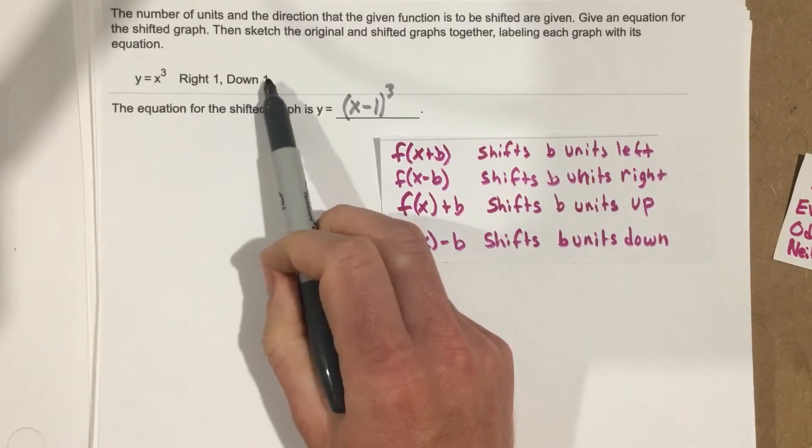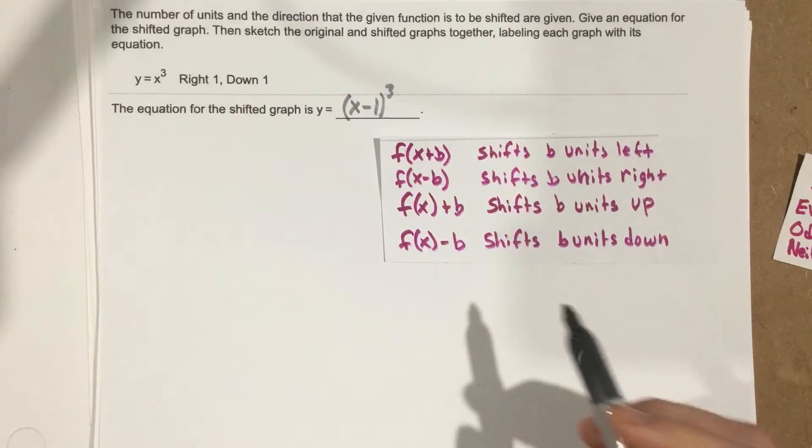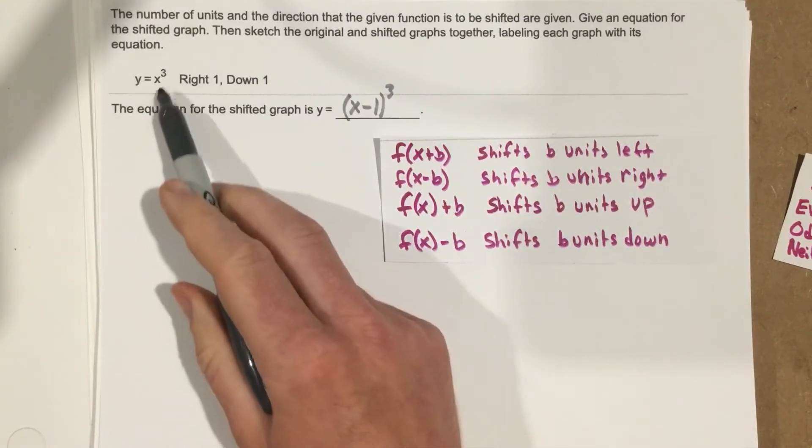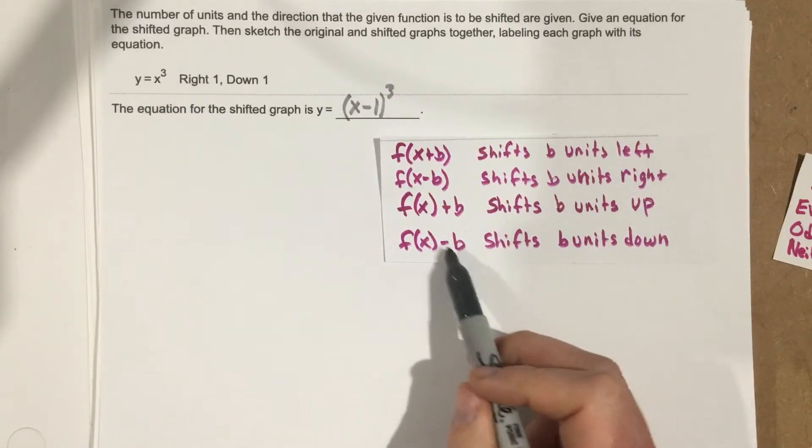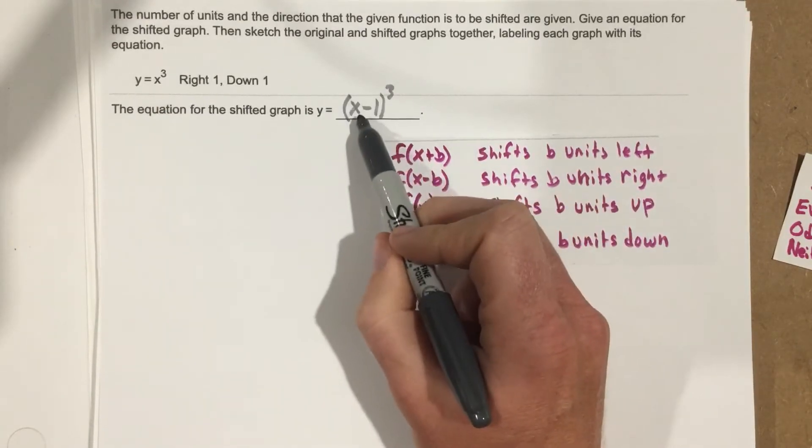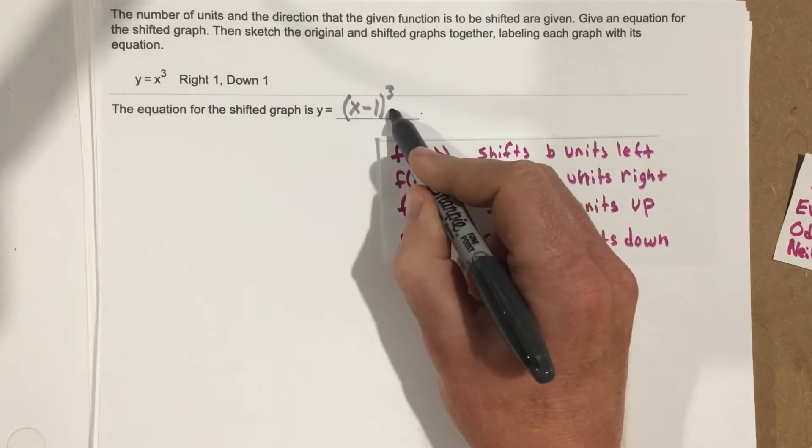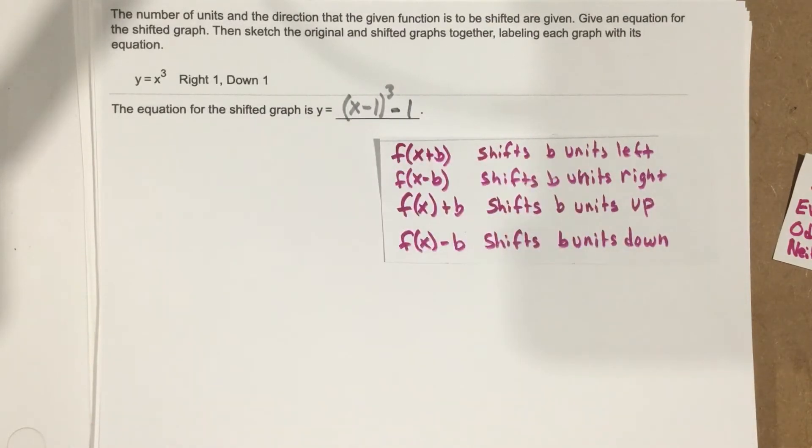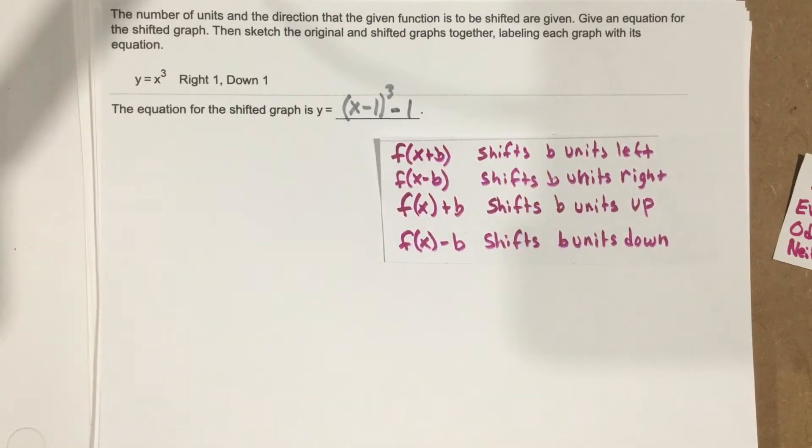Now to go down 1, we subtract from the entire function. The function is (x - 1)³, so to go down 1, we subtract 1 from the function: y = (x - 1)³ - 1. This is the new equation for the shifted graph.